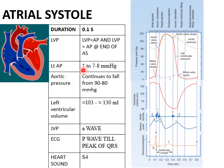During atrial systole, left atrial pressure rises by 7 to 8 mmHg. Left ventricular volume rises from approximately 103 to 130 ml. An A wave due to atrial contraction is seen in the jugular venous pulse. In the ECG, atrial systole can be seen from the peak of the P wave to the peak of the QRS complex.